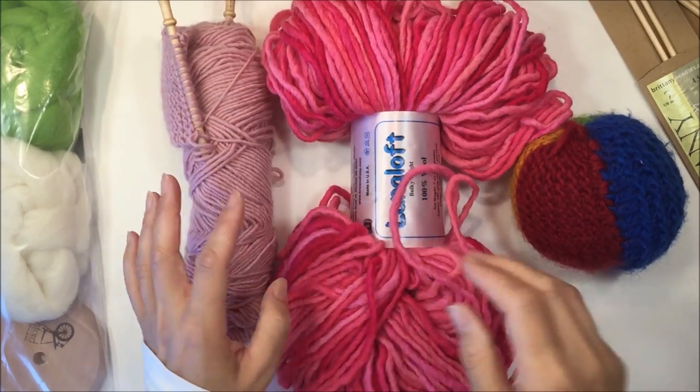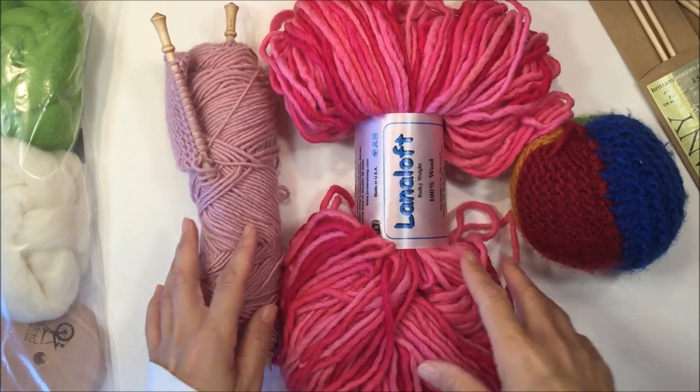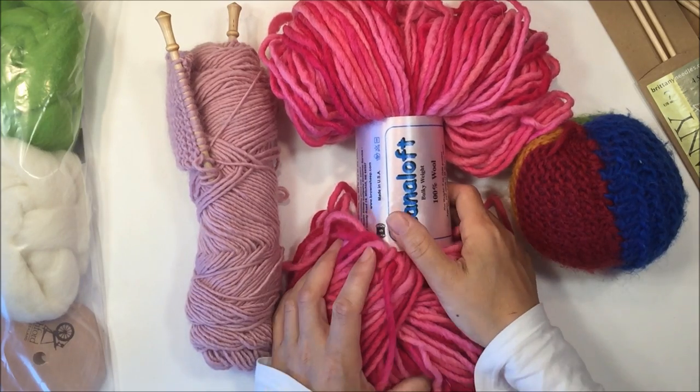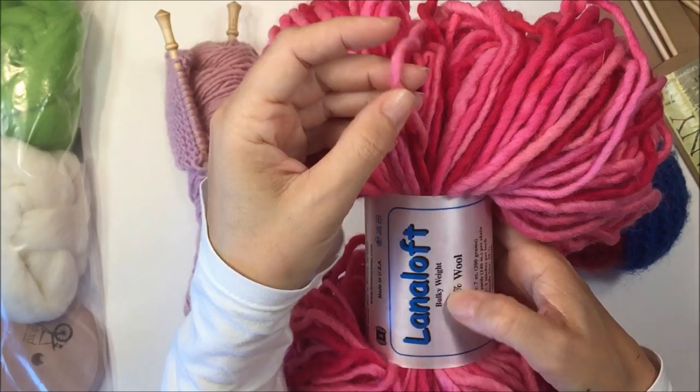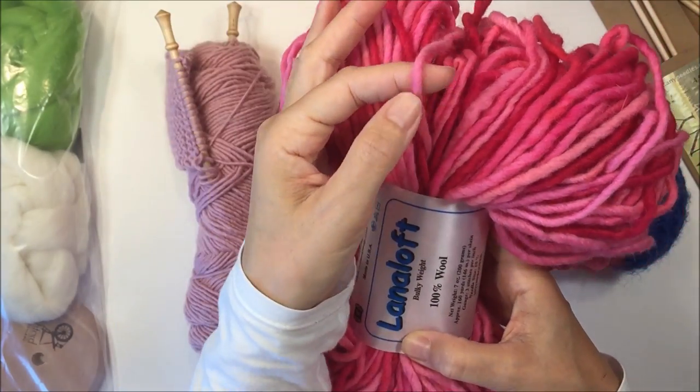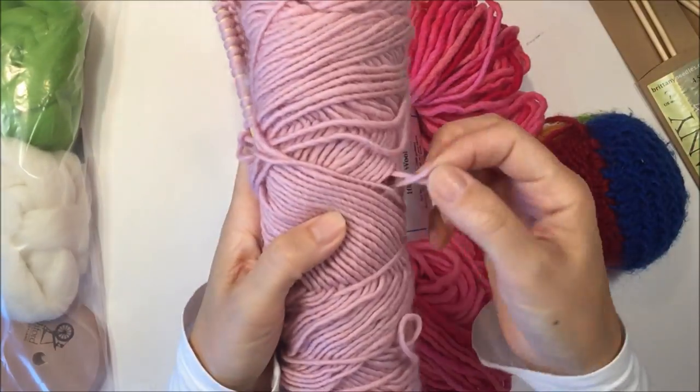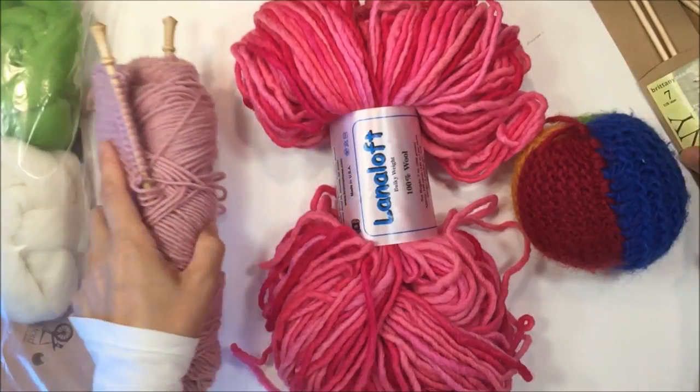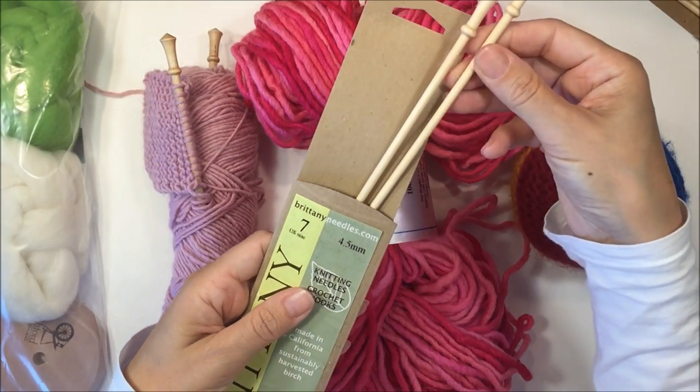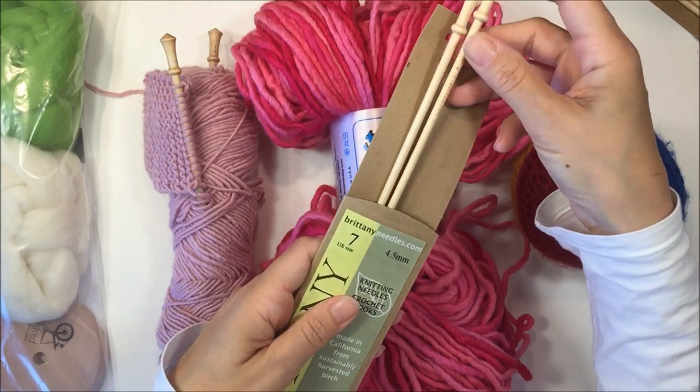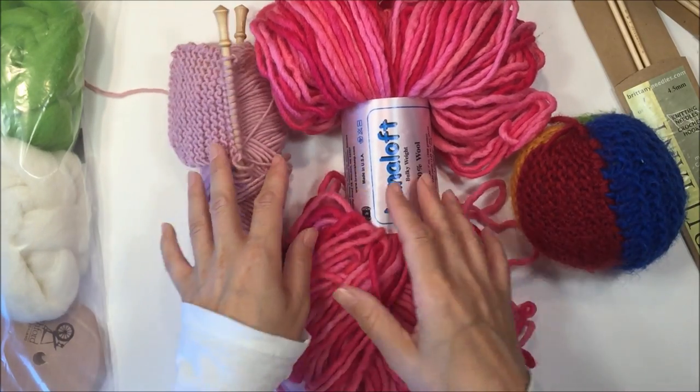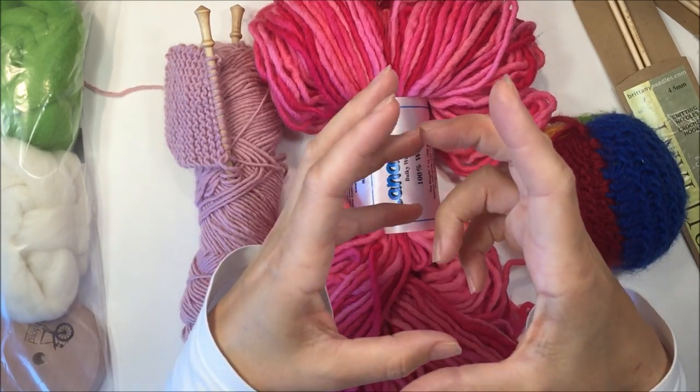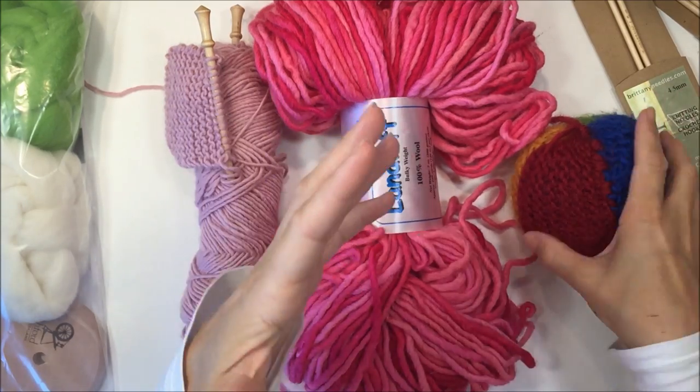The last thing I want to show you are some of the different supplies that you'll use for first grade. One of the activities that you're going to be doing is knitting. This is the thick or the bulky weight of yarn. And this is the worsted, so this is a little bit thinner. Just want to make sure that you're getting the correct needles depending on the thickness of your yarn.